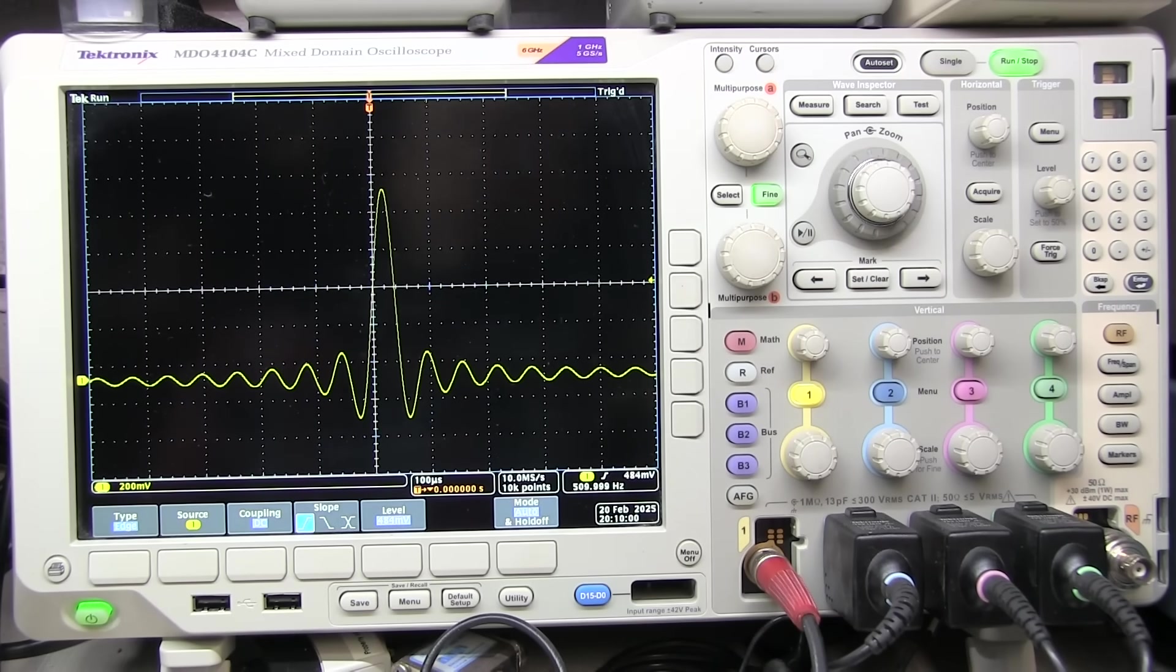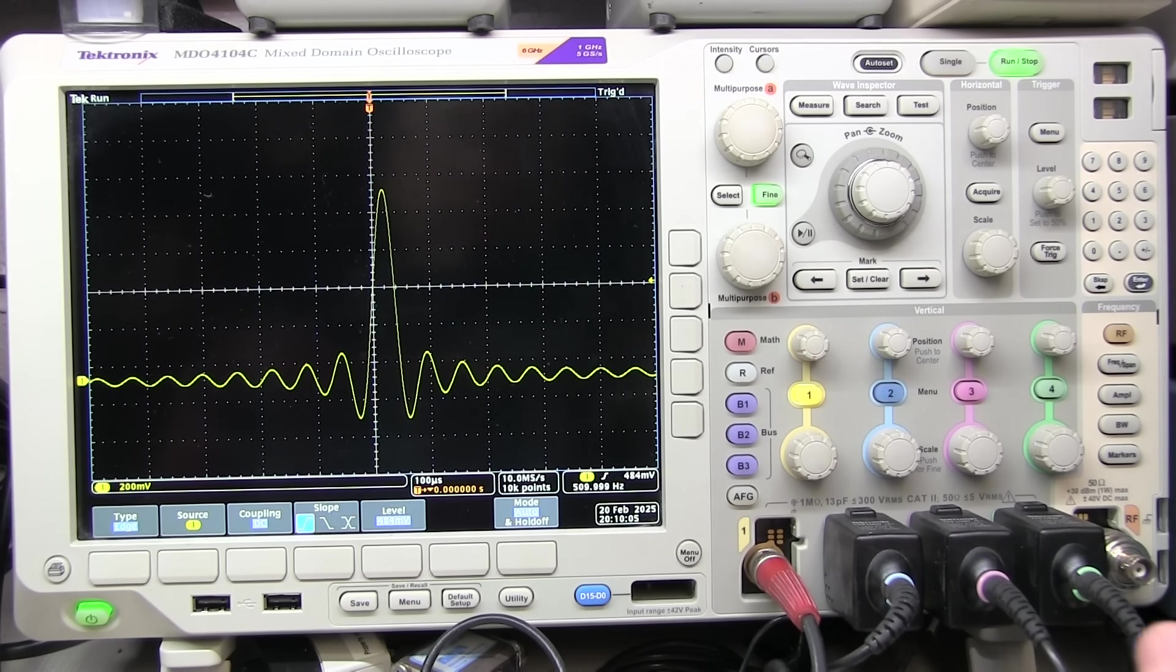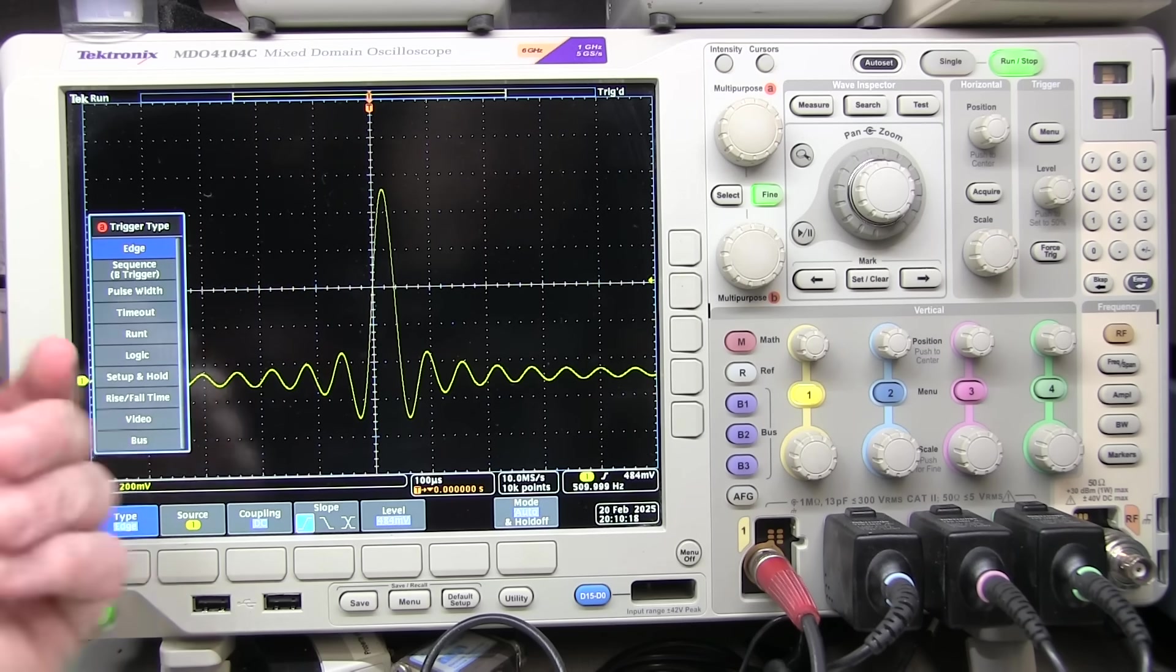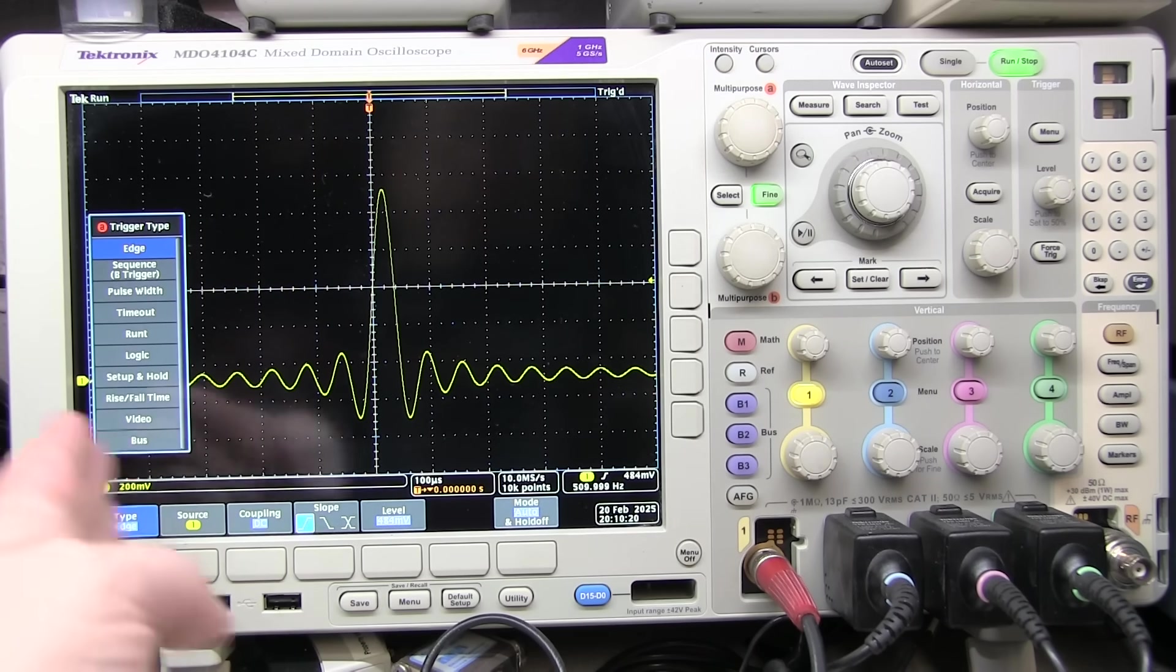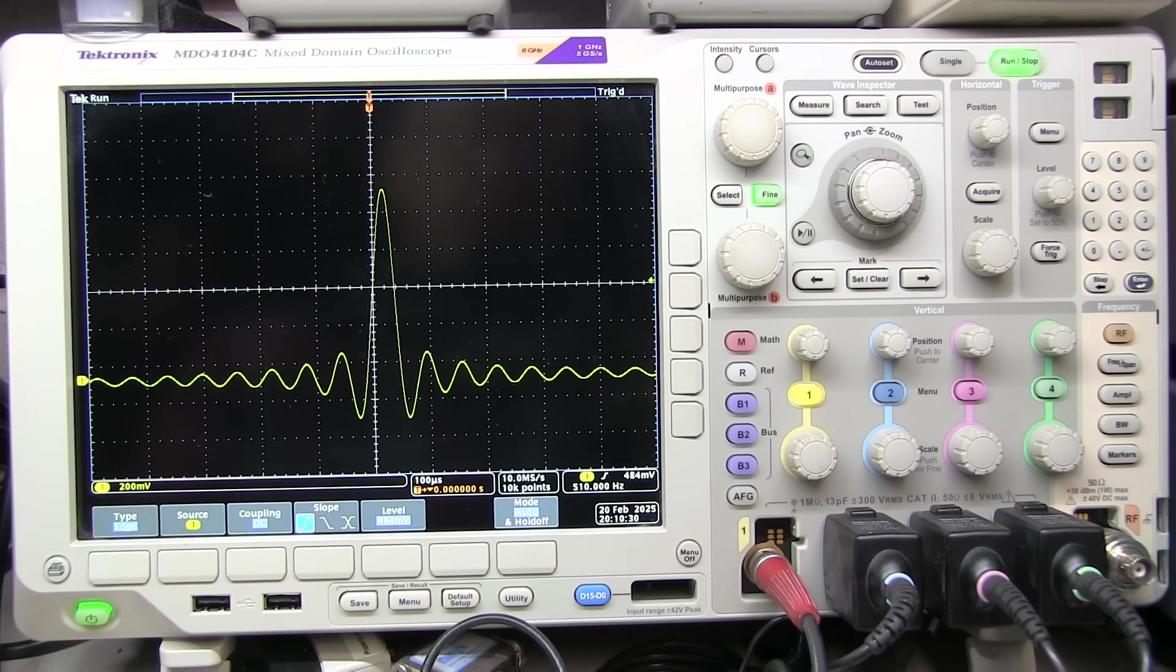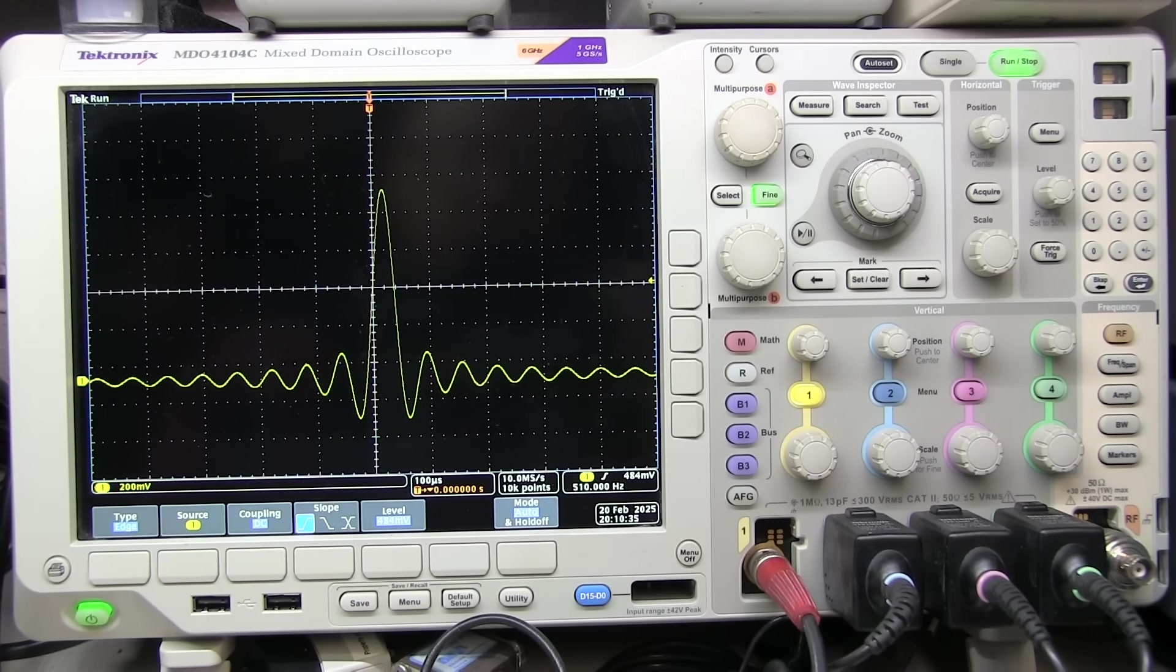Now while most analog scopes are limited to simply an edge trigger, rising or falling edge, or maybe trigger on the AC line voltage, digital scopes offer many more different trigger types to trigger on different aspects of a signal, like a particular pulse width, or a time-out period, how long the signal stays above or below a threshold, as well as runt pulses and things like that. But we'll just focus on the edge trigger today. But the digital scopes do offer many more trigger modes to isolate particular events of interest to put them on the screen.